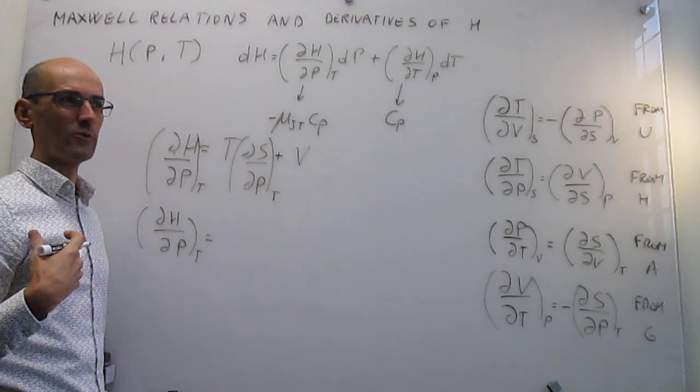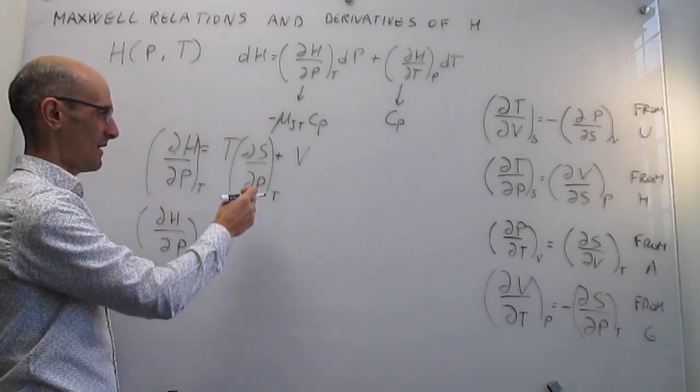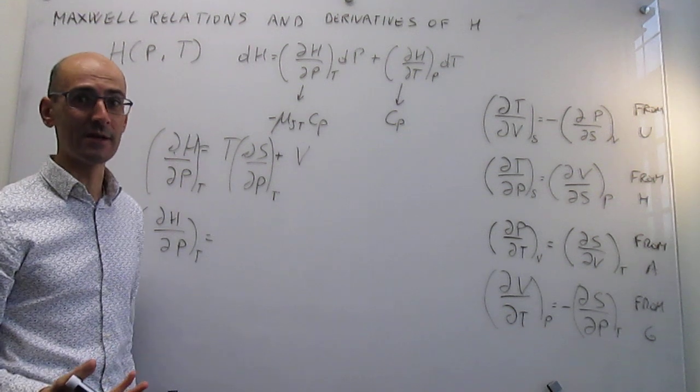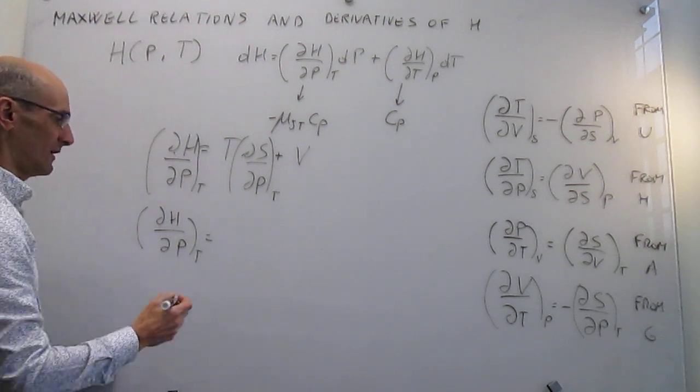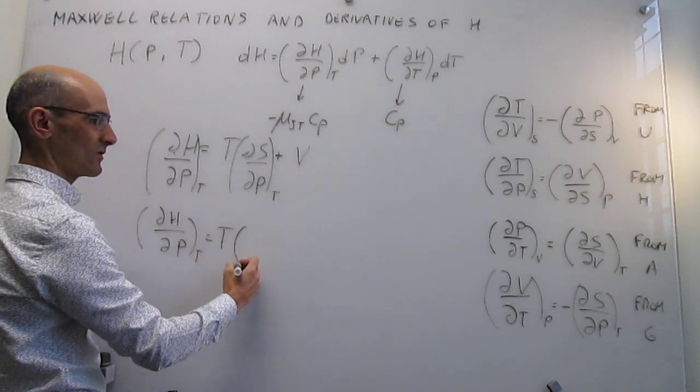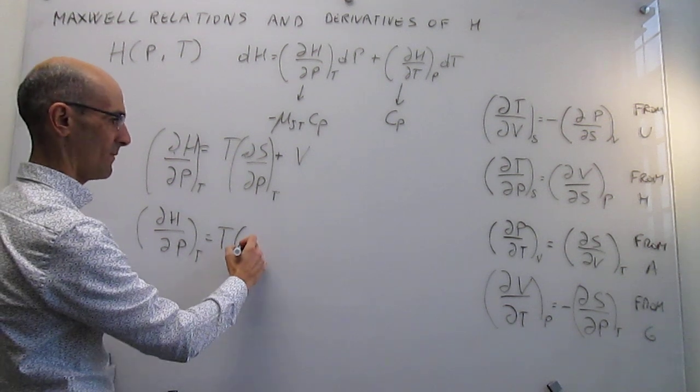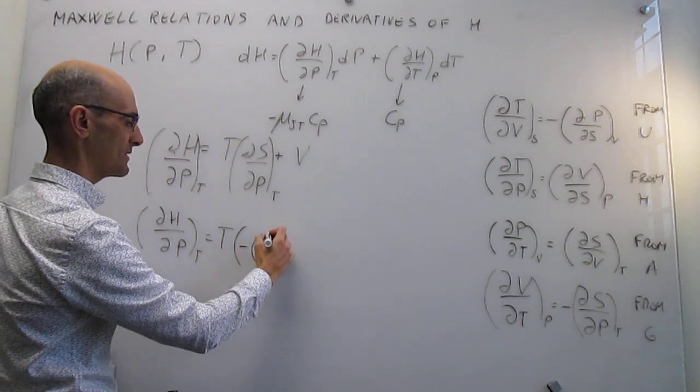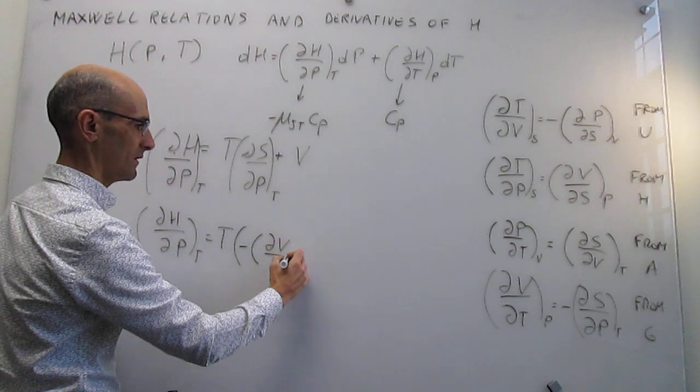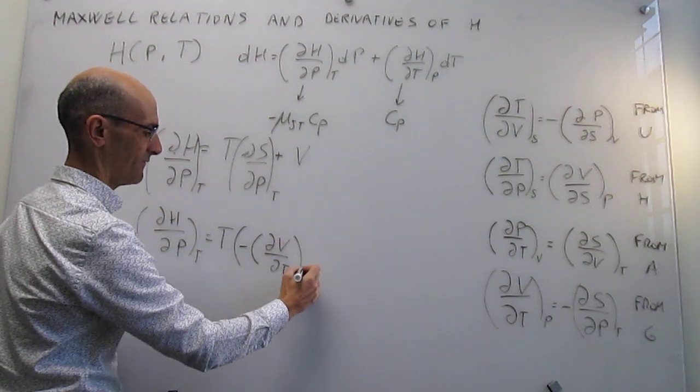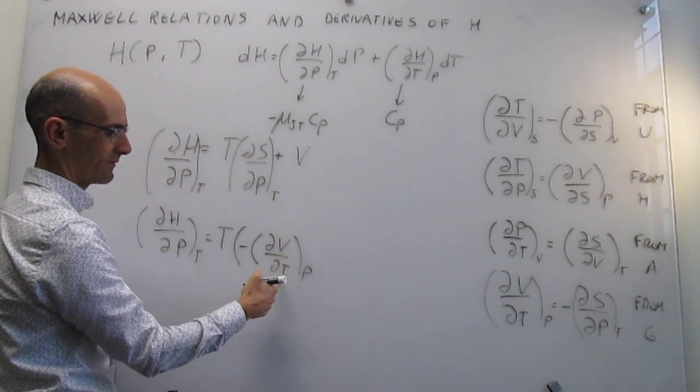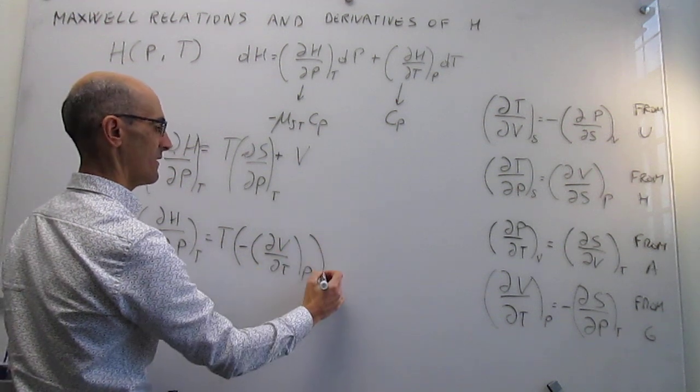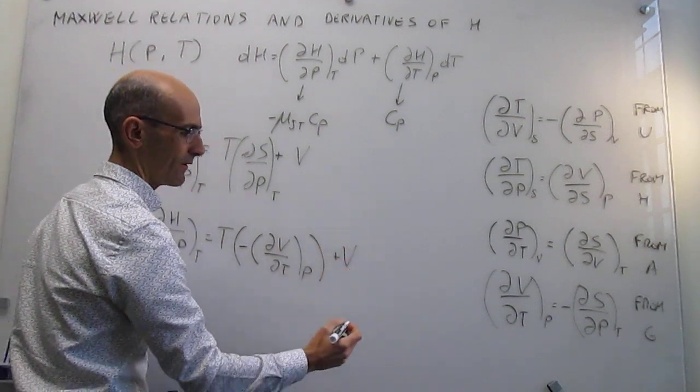Let's try to do that. This is going to be now minus the partial derivative of V with respect to T. And notice that these variables are now much easier to control: volume, temperature, pressure, and then plus V.